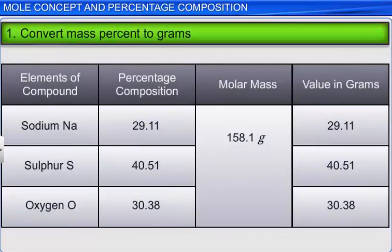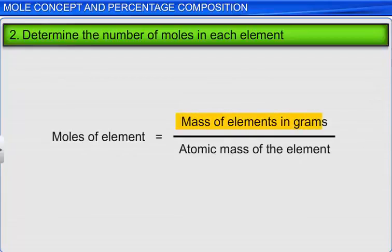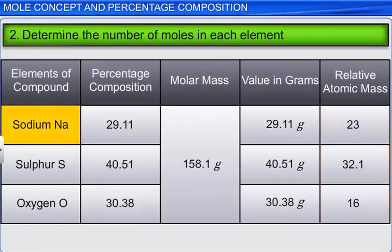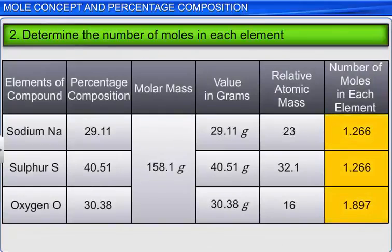First, we have to convert the mass percent to grams. As we have the values in mass percent, we can consider the value of the sample as 100 grams and then convert the percent values to grams. Next, we determine the number of moles in each element by dividing the mass of the element in grams by the atomic mass of the element. The atomic masses of sodium, sulfur, and oxygen are 23, 32.1, and 16 respectively. On substituting the values, we get the number of moles for each element as 1.266, 1.266, and 1.897.